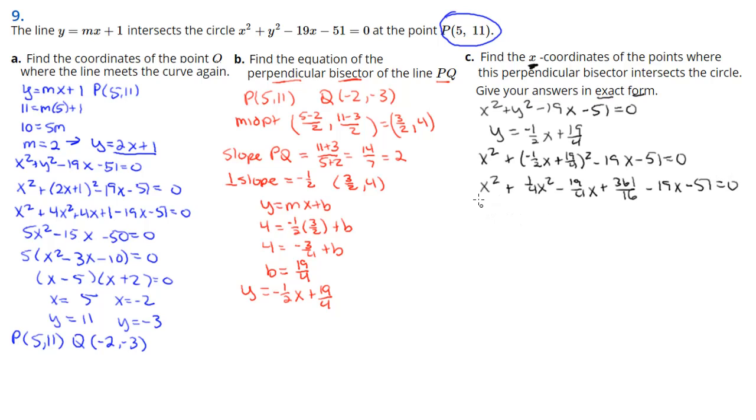Keep filling in my information: negative 19x minus 51. Now I'm going to combine like terms and get 5/4 x squared minus 95/4 x, then minus 455 over 16.